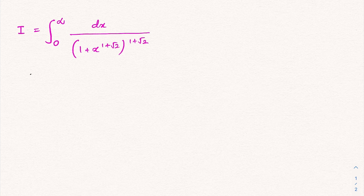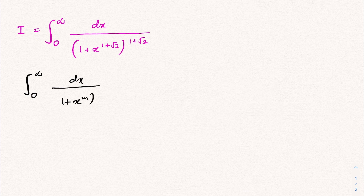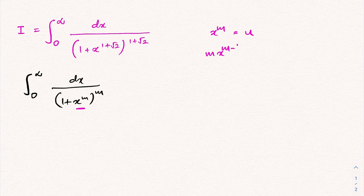We generalize by taking the integral from zero to infinity of dx over (1 + x^m)^m. To solve this integral we use a substitution. Since we have x^m, I am going to take x^m = u, then differentiating gives m·x^(m−1) dx = du.